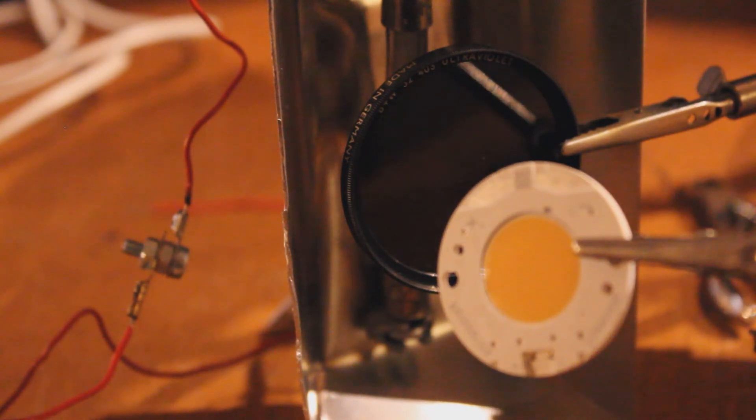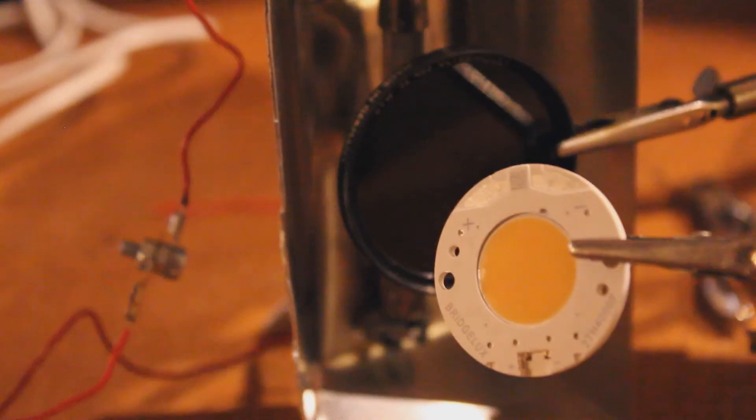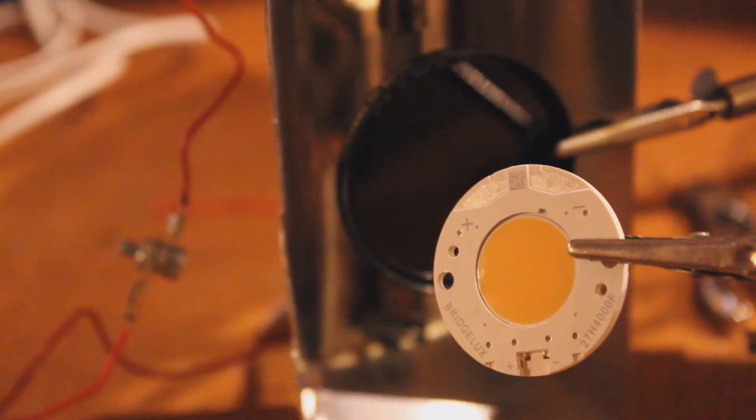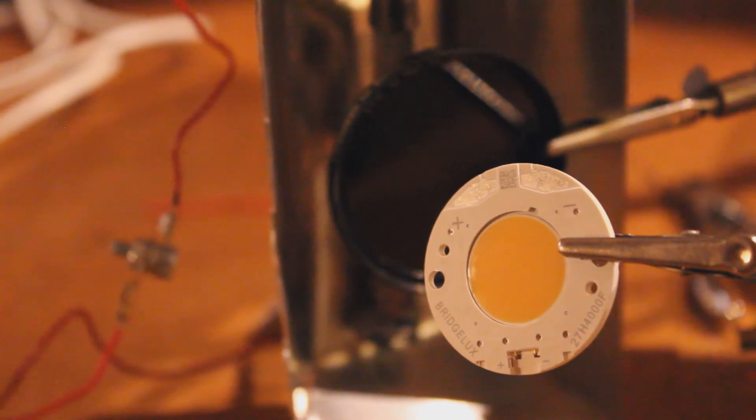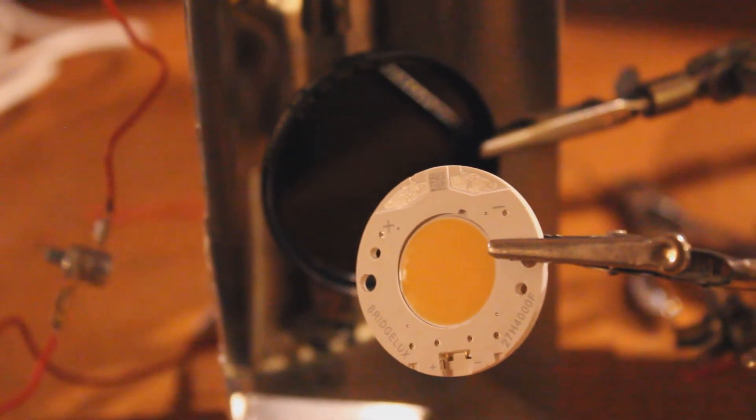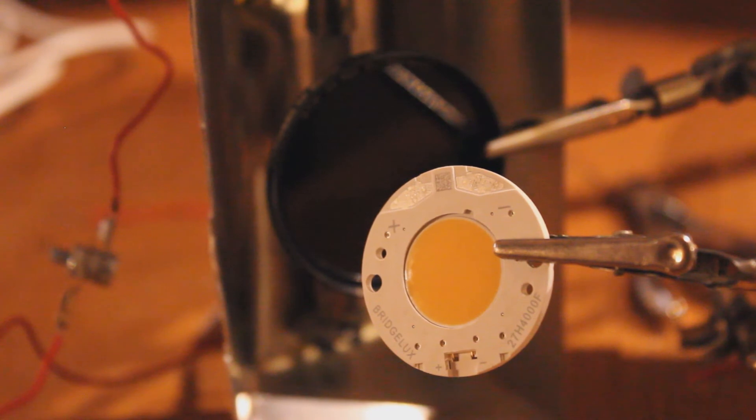This is a white LED. The emulsion on top of it glows when hit with ultraviolet or blue light. That's what makes it glow in the first place. So if this glows, we'll know that some ultraviolet is making it through.